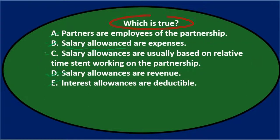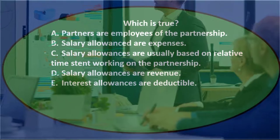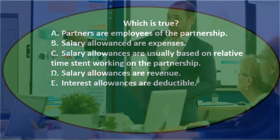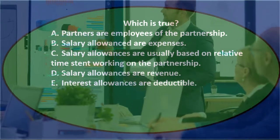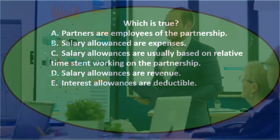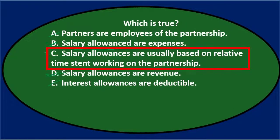The answer is C: salary allowances are usually based on relative time spent working in the partnership. This is about how we allocate net income — if one individual works more in the partnership than the other, they should receive more of the net income. We create something like a salary, but it doesn't go through payroll. We give them a wage-type distribution from net income before allocating the remainder.